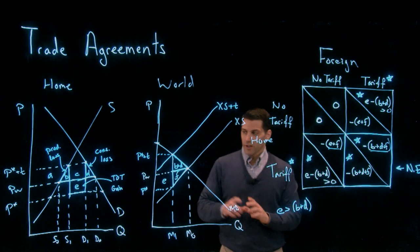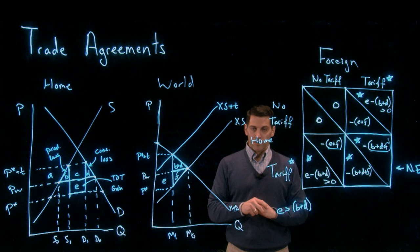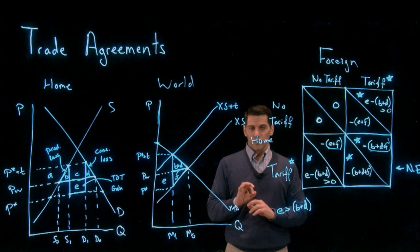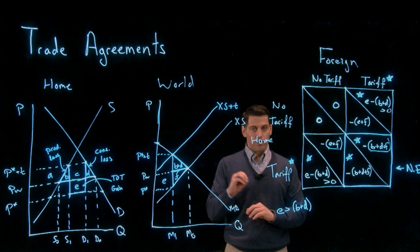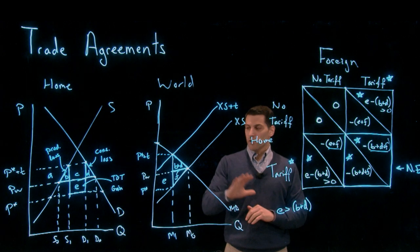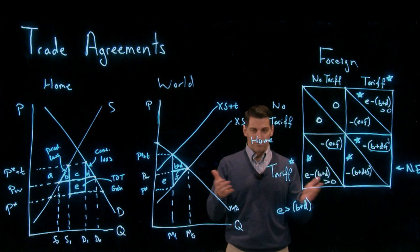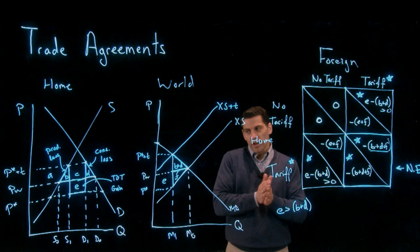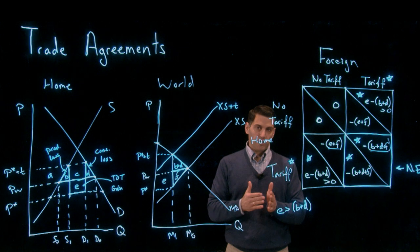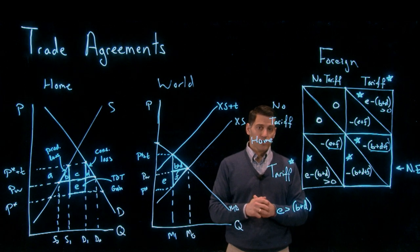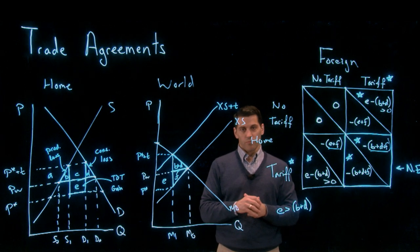The gains from a free trade agreement are seen in keeping us away from this bad equilibrium outcome. Another analysis we can do is to think about what happens when it's not clear that we're buying goods from the lowest cost producer. We've assumed a two-country world, but what if we throw in a third country and form a trade agreement with one but not the other? In the second part of this video, we'll look at the concepts of trade creation and trade diversion.